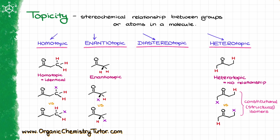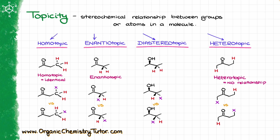When it comes to diastereotopic groups, things are a little bit more interesting. I'm going to use a slightly different example — instead of a carbonyl, I'm going to use a chiral alcohol, and I'm going to look at these two hydrogens in the middle of the molecule. If I do my trick with the replacement, I'm going to get these two molecules. The stereochemical relationship between these two is diastereomers. And because the molecules resulting from the replacement with an X are diastereomers, the original hydrogens themselves are going to be diastereotopic.